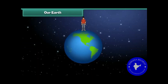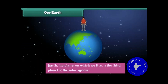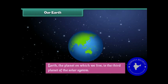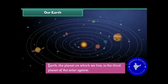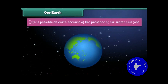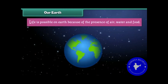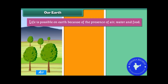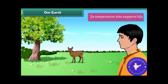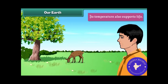Earth, the planet on which we live, is the third planet of the solar system. Life is possible on Earth because of the presence of air, water, and food. Its temperature also supports life.